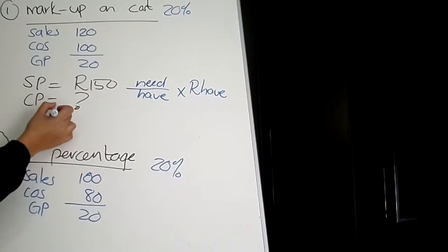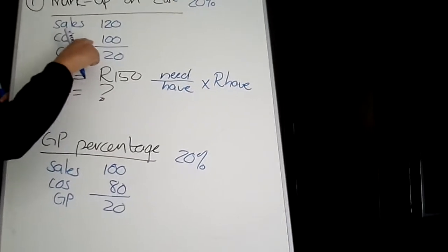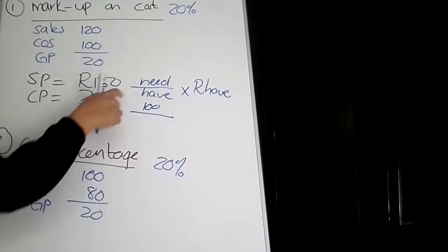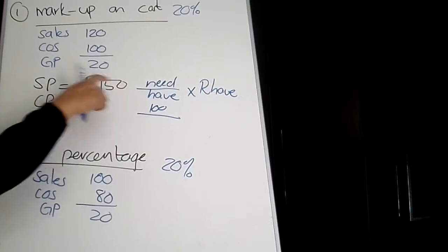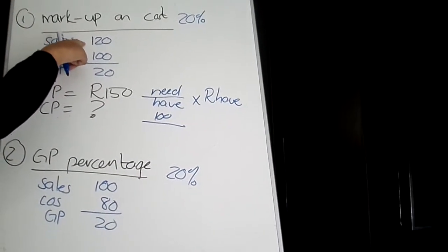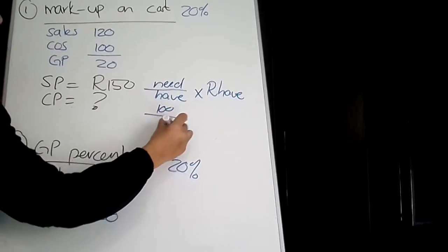So what do you need? Cost price. What is cost price? 100. So we're going to say 100 divided by what I have. What I have is my selling price. According to this, my selling price is 120%, so we'll put 120 at the bottom.